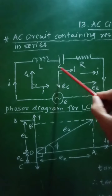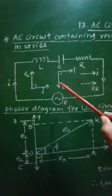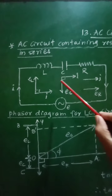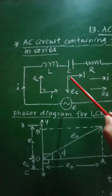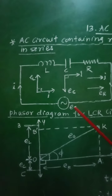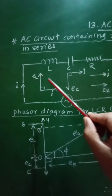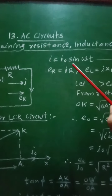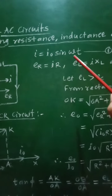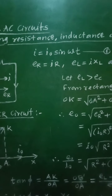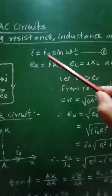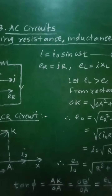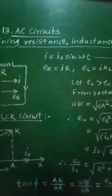As L, C, and R — all three components are connected in series — the current flowing through all the components L, C, R has the same amplitude and phase. Let I be the current flowing through all three components, which will be given as I = I₀ sin(ωt), equation number 1. This equation represents the current flowing through the LCR circuit.